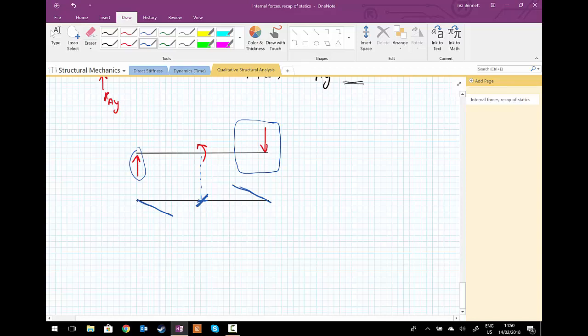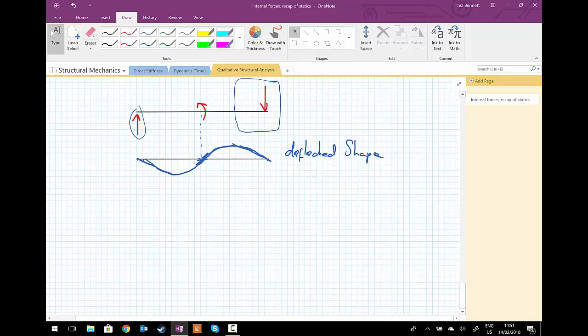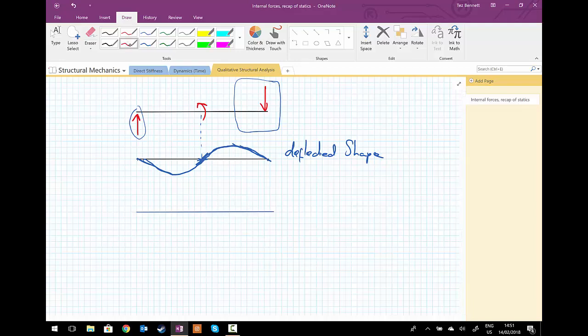It's trying to rotate anticlockwise and I'm going to put those bits of information together. And now, that's my quick sketch of the deflected shape. And I'm going to use this information in this case to help me draw the bending moment diagram. Drop a dotted line down.